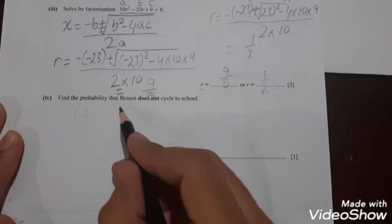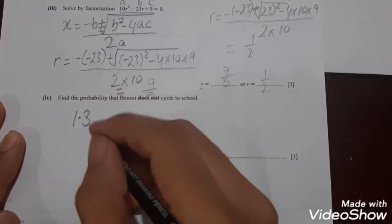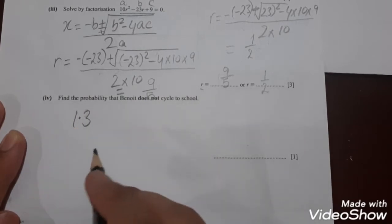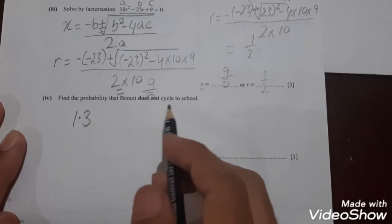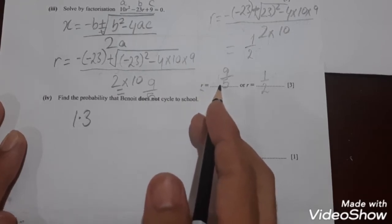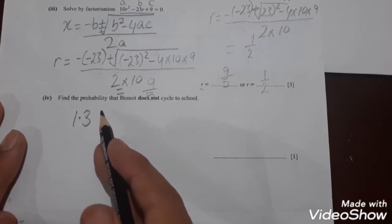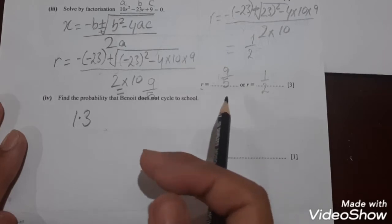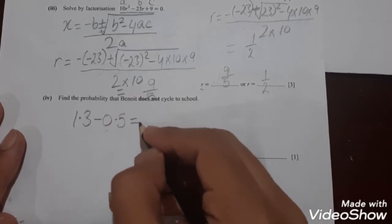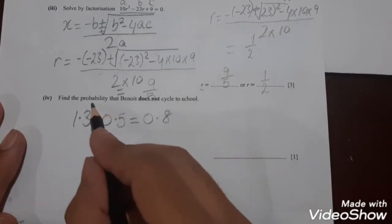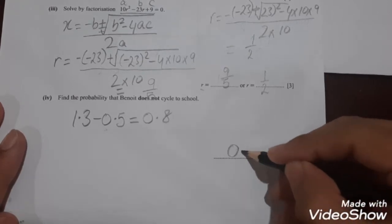The next part asks: find the probability that Benoit does not cycle to school. The probability is 1.3 minus R. If we use R equals 9 over 5, which is 1.8, we get a negative value, so we discard it. Using R equals 1 over 2, we subtract 0.5 from 1.3, which gives 0.8. So the probability that Benoit does not cycle to school is 0.8.